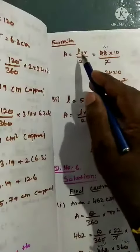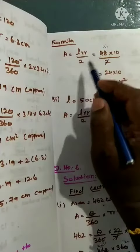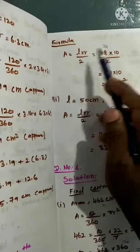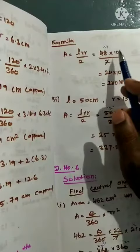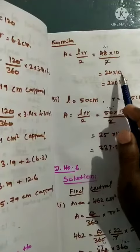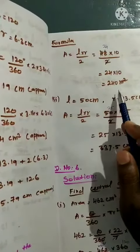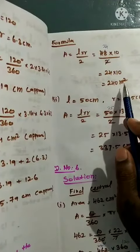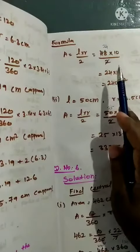Area of the sector equals... radius is 10cm, divide by 2. So we get 24 into 10, which equals 240 m².